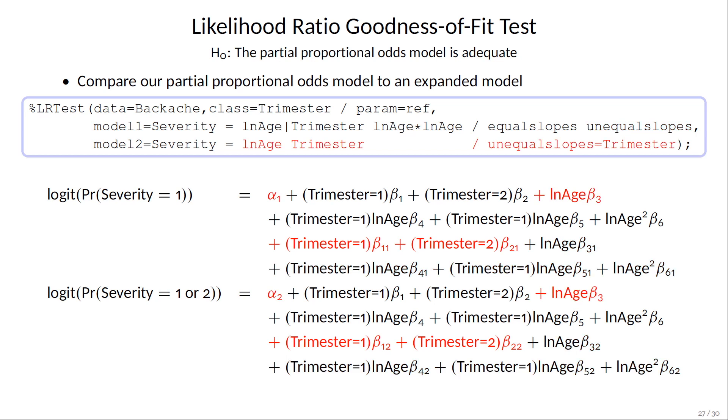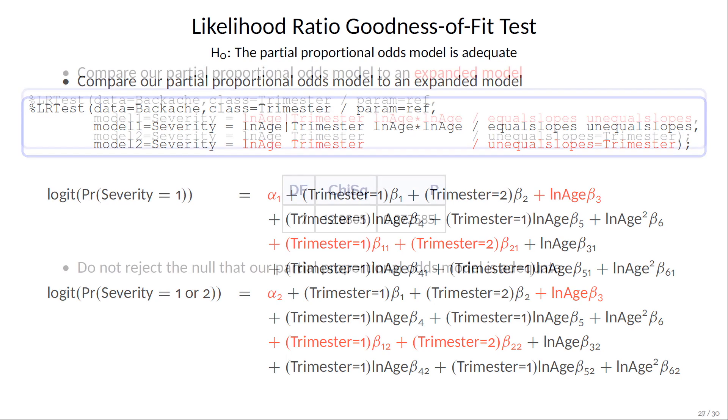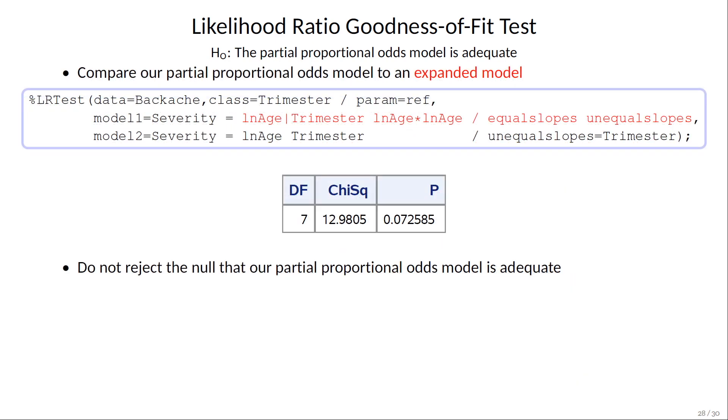For our test, we are comparing our model, which contains all the terms in red, to the expanded model, which involves every term. And we do not reject the null that our model is adequate, but there may be some structure there since the p-value is pretty small.